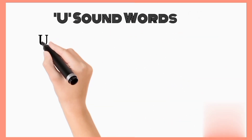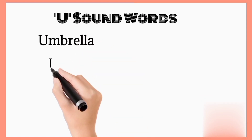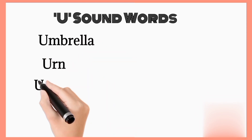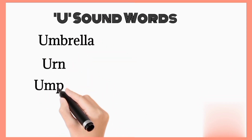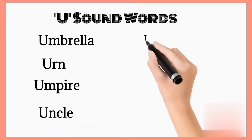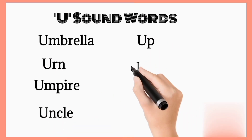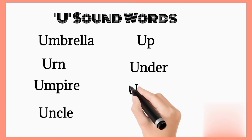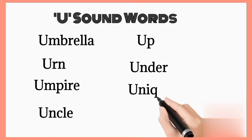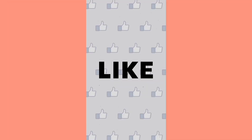U sound vowels. Like umbrella. Uncle. Up. Under. Unique. Uniform.